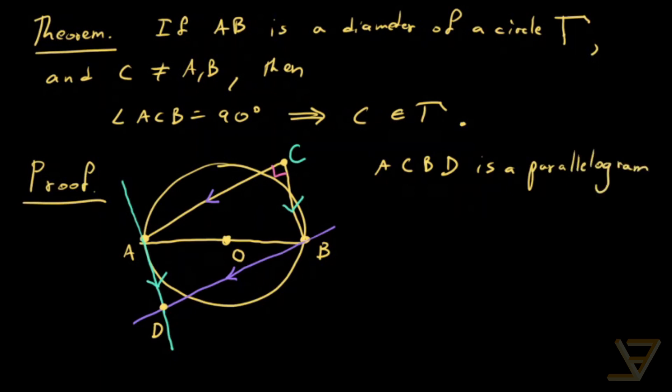By construction it's a parallelogram because opposite sides are parallel. But don't forget that we have a 90 degree angle up here. So in a parallelogram, if you have a 90 degree angle, then all of the interior angles are 90 degrees. So this is in fact a rectangle.